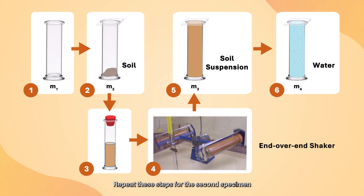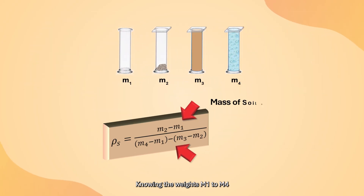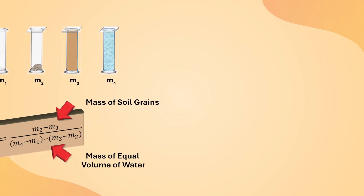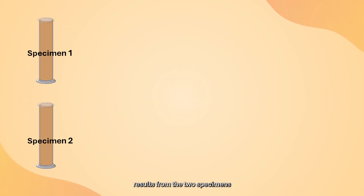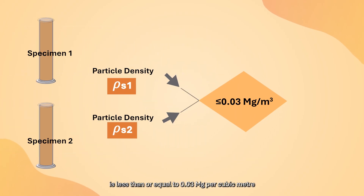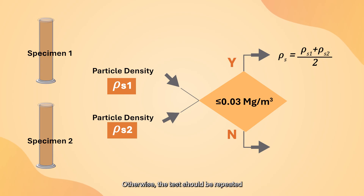Repeat these steps for the second specimen. Knowing the weights M1 to M4, the particle density can be obtained using the equation shown here. If the difference in the test results from the two specimens is less than or equal to 0.03 Mg/m³, the average is taken to be the particle density of the soil. Otherwise, the test should be repeated.